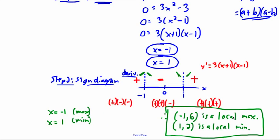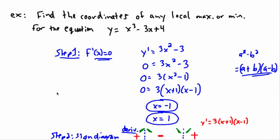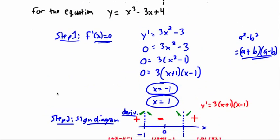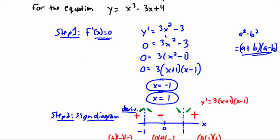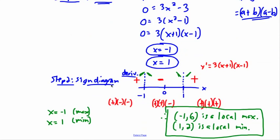That may sound long and a little time consuming, and it kind of is — but I think it's really important and helpful. So the key is: step one, find where your derivative is zero; step two, check that the derivative changes sign left or right of that point.